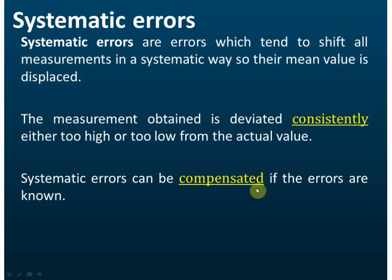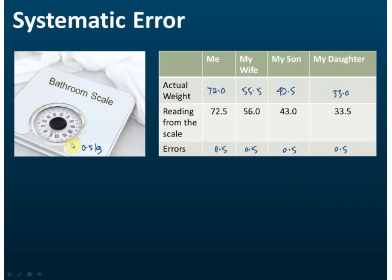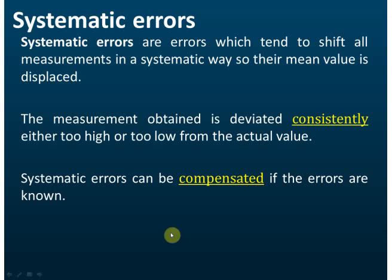Systematic error can be compensated if you know the error. For example, if I know the bathroom scale gives a reading that is 0.5 kg more than the actual value, I can remove the error every time by subtracting 0.5 kg. So for systematic error, if you know the error, you can remove it.